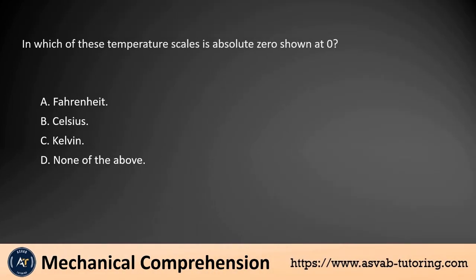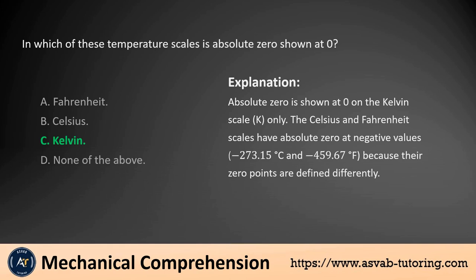In which of these temperature scales is absolute zero shown at zero? A. Fahrenheit. B. Celsius. C. Kelvin. D. None of the above. The answer is C, Kelvin. Absolute zero is shown at zero on the Kelvin scale only. The Celsius and Fahrenheit scales have absolute zero at negative values: minus 273.15 degrees Celsius and minus 459.67 degrees Fahrenheit, because their zero points are defined differently.